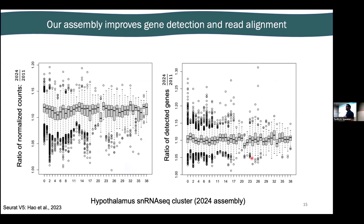We have this new assembly and annotation, and we did some RNA sequencing and single-cell RNA sequencing. This is a basic QC plot comparing our assembly to the 2011 assembly using single-cell RNA sequencing data from the hypothalamus. We found a 10 to 15% increase in the number of reads being counted, and a 10 to 30% increase in the number of genes being detected in our single-cell data. For those who know the price of single-cell data, that's a pretty substantial increase in yield just by updating the assembly.